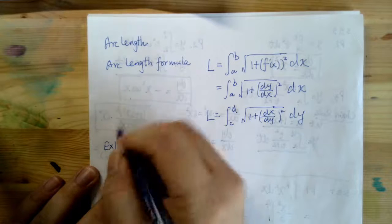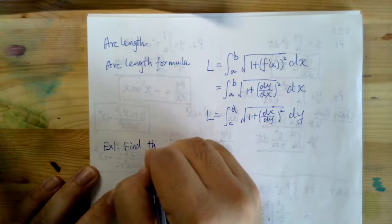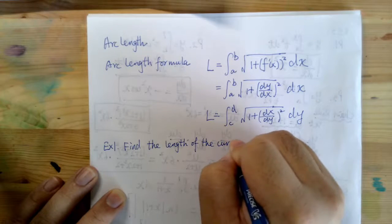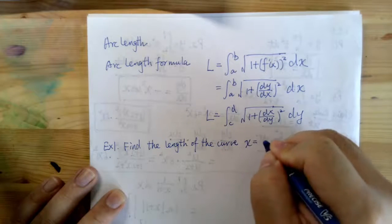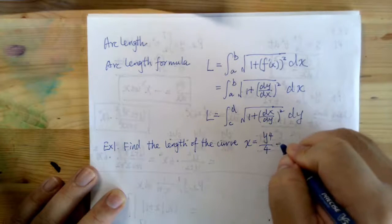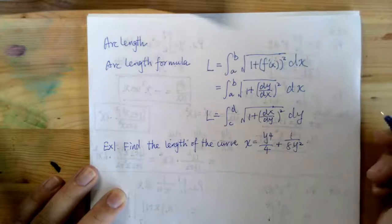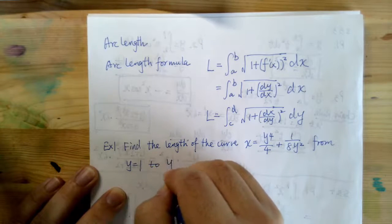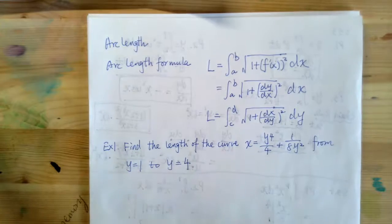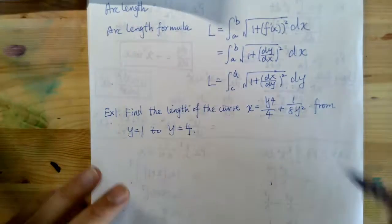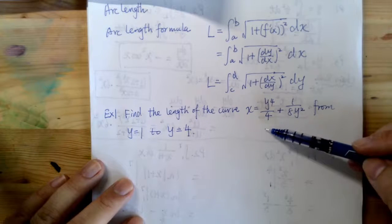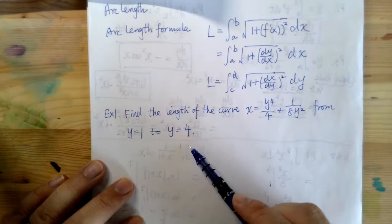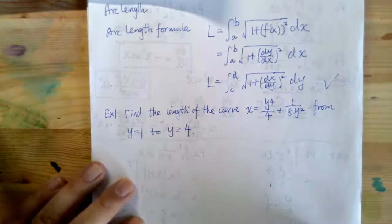Now let's look at Example 1: find the length of the curve x = y⁴/4 + 1/(8y²), from y = 1 to y = 4. The equation of the curve is given in terms of y, so we will apply the dy form of the arc length formula to handle this problem.